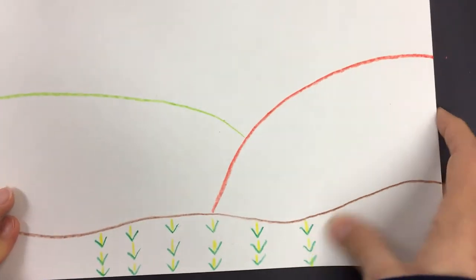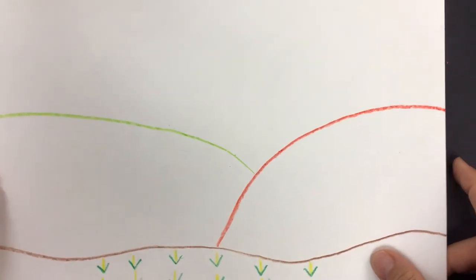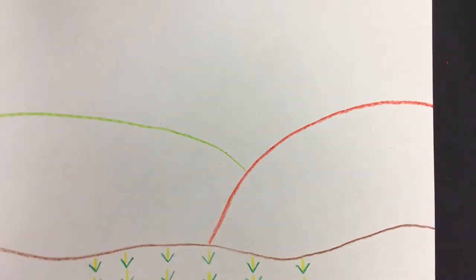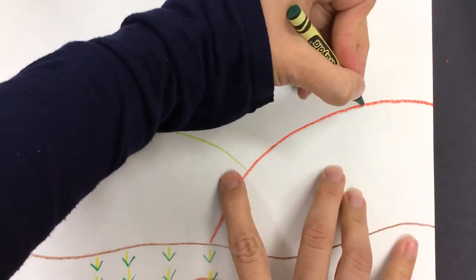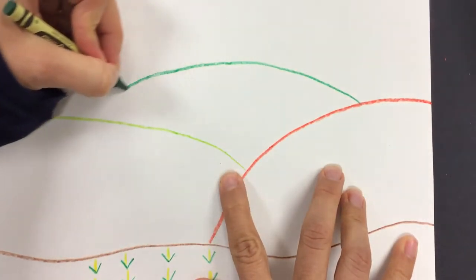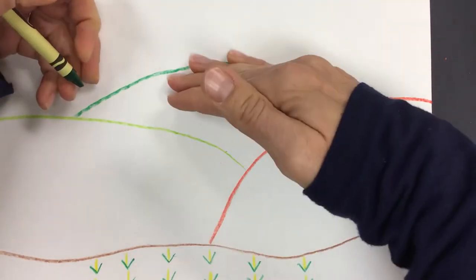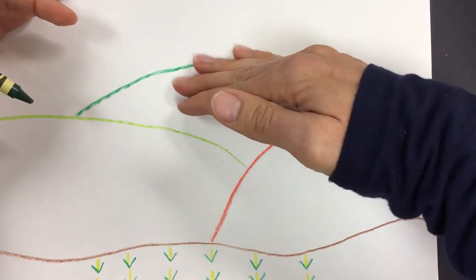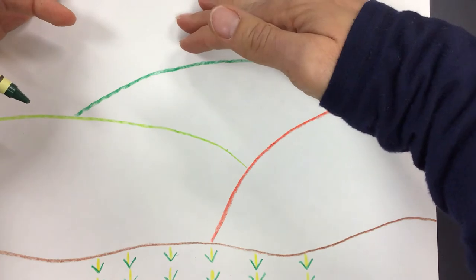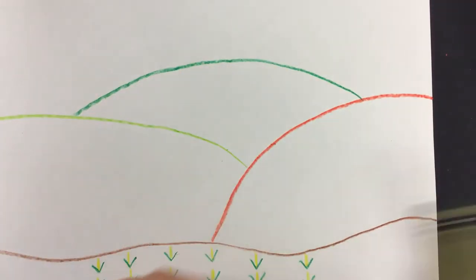We'll add some details to these hills in just a minute. I'd like to do one more hill way in the background. This time I'll use regular green and go way back there, that's called the background. That's the highest part of the paper. We're using the space that goes all the way towards the top and now let's add some details.